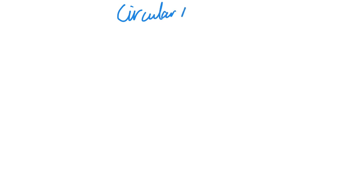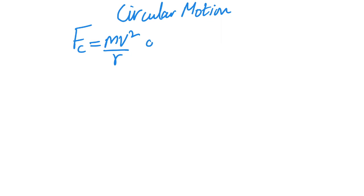Hello everyone, welcome to Physics with Nausha Rathlam. This is the second lecture for circular motion. In the previous lecture we had basically derived the equations for centripetal force, which were mv² over r or mr omega², and we had derived the equations for centripetal acceleration as well. But my last comment in the previous lecture was that centripetal force itself is nothing — it is a resultant force.